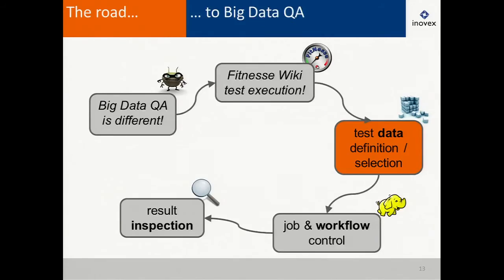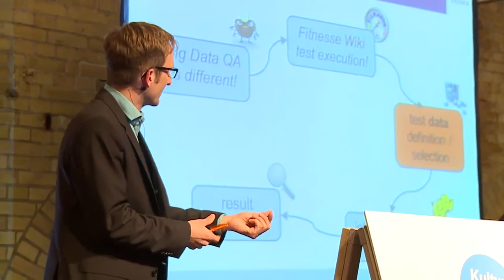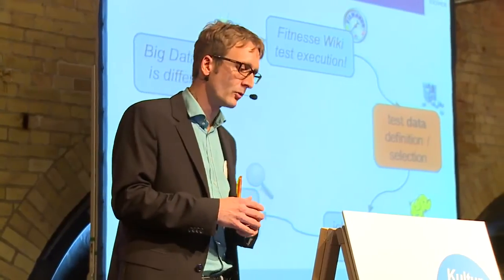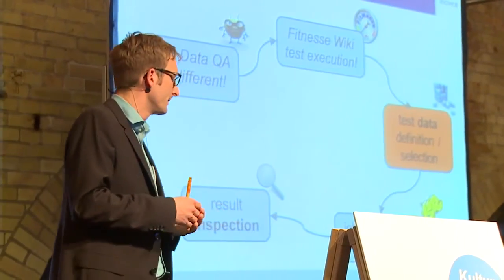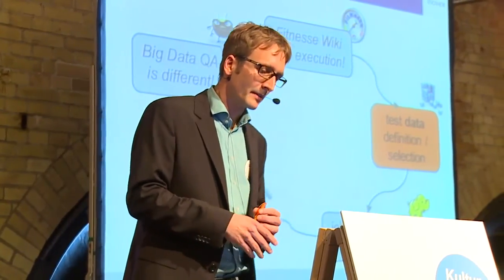To sum up this second step: we did FitNesse wiki test execution, and we had good results because everybody can now write tests. At 1&1, many business engineers are writing tests in this very simple syntax. Because we're in the data-driven business, it's very important to have good test data, since the quality of the test data determines the quality of the test. So how can we define and write test data?